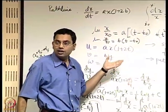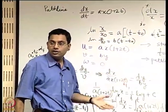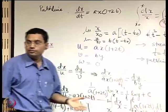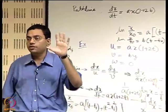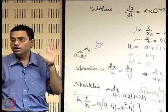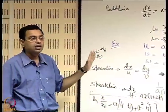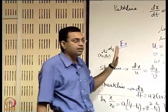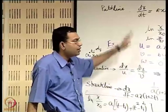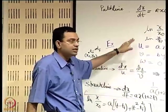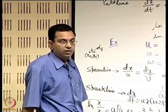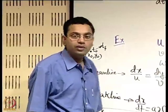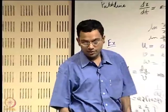The key conceptual difference is that for the path line, the initial time t0 is fixed and t varies; for the streak line, ti is a variable parameter (the injection time) that must be eliminated between the x and y equations. Streamline integration is most straightforward. Understanding these distinctions between streamline, streak line, and path line, and how to derive their equations from a given flow field, is an important outcome of this session.